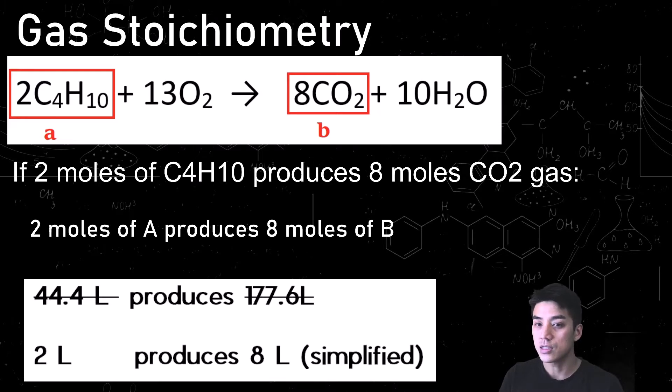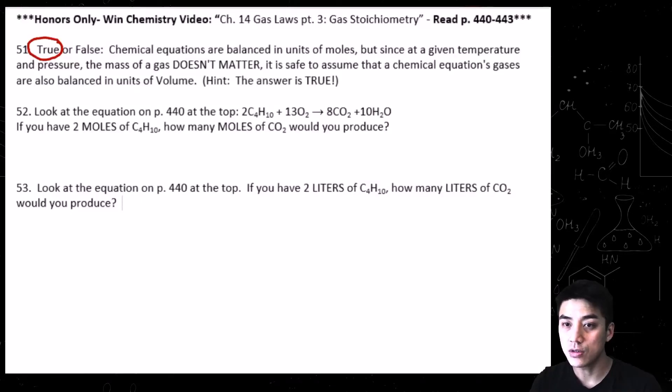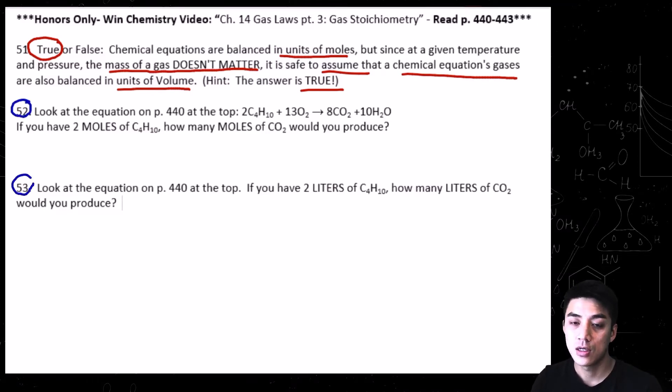And that's the shortcut that you can take. Number 51 is true, and all the stuff that I've been discussing leading up to this moment would tell you that the balanced equations are balanced in units of moles and volume because of Avogadro's principle, simply because 1 mole of any gas is equal to 22.4 liters. So that means you have these equal ratios.